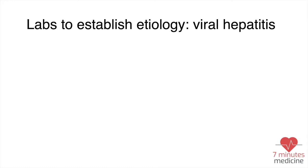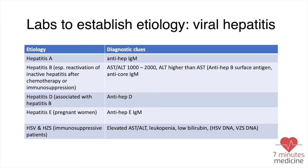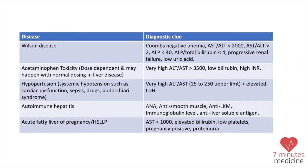Labs that can help differentiate the etiology of acute liver failure: if you suspect hepatitis A, order IgM; for hepatitis B, order anti-HBs antigen and anti-core IgM; for hepatitis D, anti-HBD; and for hepatitis E, IgM — especially in pregnant patients. If you suspect herpes, order DNA. Some hospitals have panel orders covering all common hepatitis types in one panel.